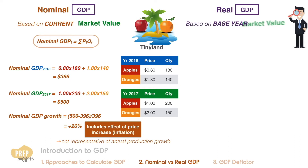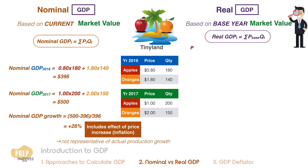Real GDP is calculated relative to a base year. By using base year prices and current year output quantities, real GDP growth reflects only increases in total output. Per capita real GDP is defined as real GDP divided by population and is often used as a measure of the economic well-being of a country's residents.